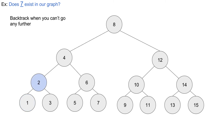Once we backtrack, the 2 continues from where it left off. The last thing it did was go left to the 1, so now it knows it can't go left anymore and tries to go right. We get down to the 3 and do the same thing: try to go left — no children — try to go right — no children — so we backtrack. We backtrack to the 2, and since we've already been to both its children, the 2 backtracks to the 4.